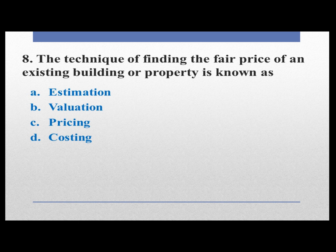The technique of finding the fair price of an existing building or property is known as: option A estimation, option B valuation, option C pricing, option D costing. The technique of finding the fair price of an existing building or property is known as valuation. Option B is correct.